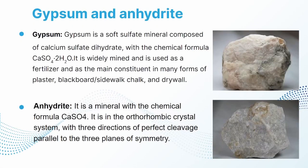Other examples are gypsum and anhydrite. Gypsum is a soft sulfate mineral composed of calcium sulfate dihydrate. It is widely mined and is used as a fertilizer. It is also used as the main constituent in many forms of plaster, blackboard or sidewalk chalk, and drywall. Anhydrite is in the orthorhombic crystal system, with three directions of perfect cleavage parallel to the three planes of symmetry.